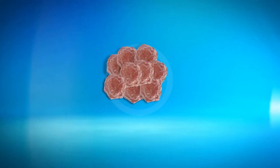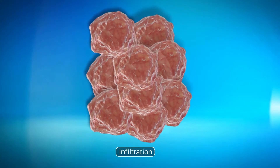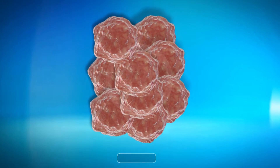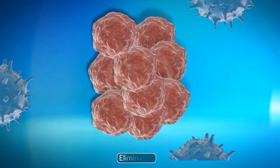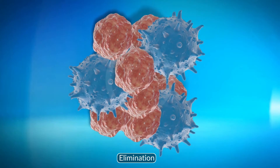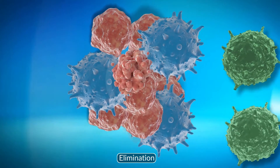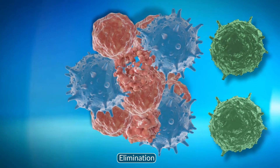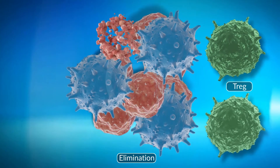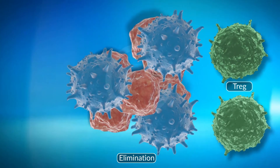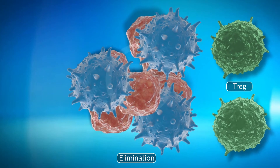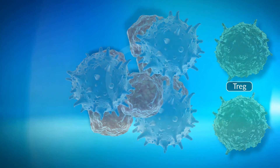The second phase is the infiltration of these cytotoxic T cells into the tumor site. The infiltrated T cells attack the tumor cells. The final phase involves the complete elimination of the tumor. The activated T cells also differentiate to form memory cells that provide immunity for a long-term against the growth of tumors.